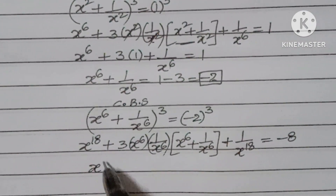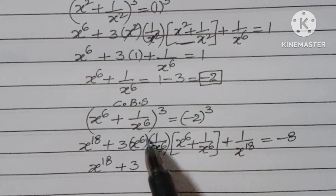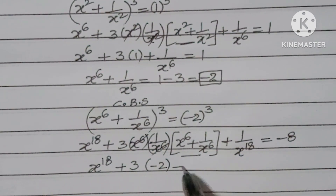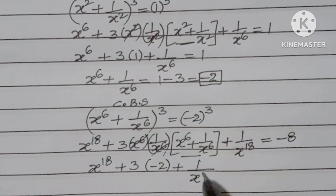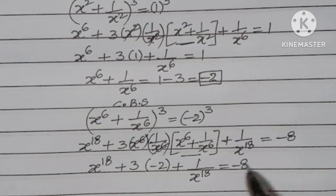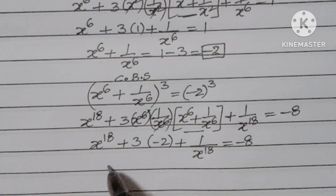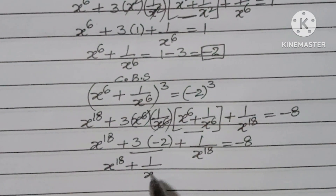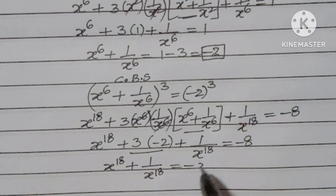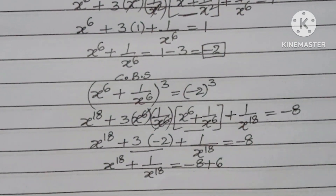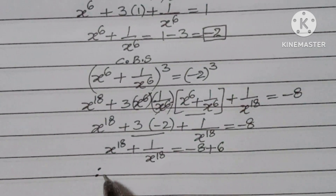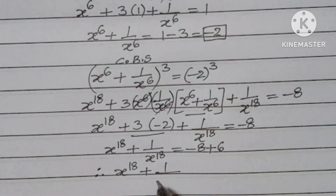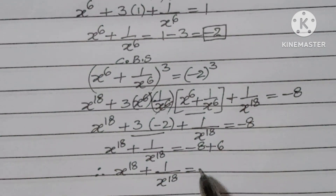The x⁶ terms cancel, and we substitute x⁶ + 1/x⁶ = -2. So x¹⁸ + 3·(-2) + 1/x¹⁸ = -8, giving x¹⁸ + 1/x¹⁸ = -8 + 6 = -2.